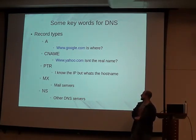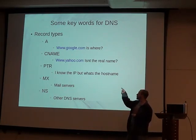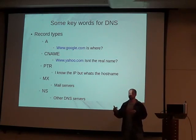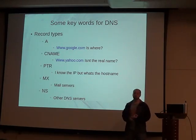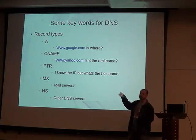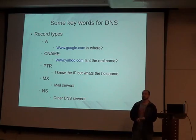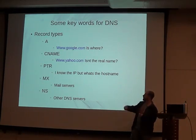A PTR record is the opposite of an A record — it knows the IP address and converts that to a hostname. You might wonder why you can't just reverse the A records. There are cases, especially with web servers and email servers, where if they don't match up you might have an issue. You may need the IP address to match the hostname as well. So you can set up all your A records and PTR records to be the same or different if needed.